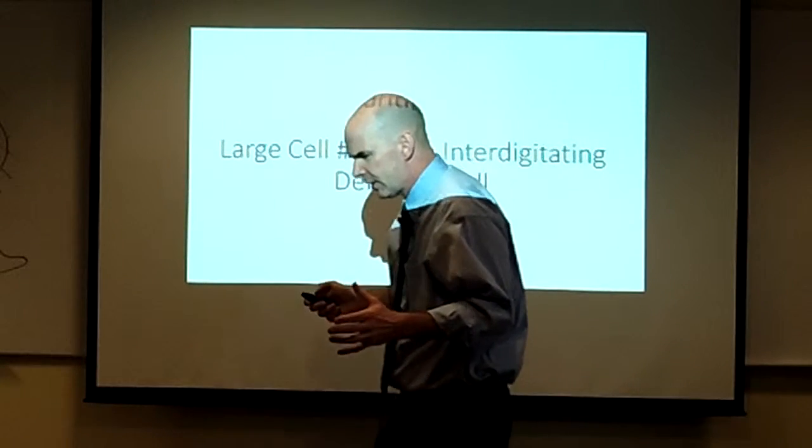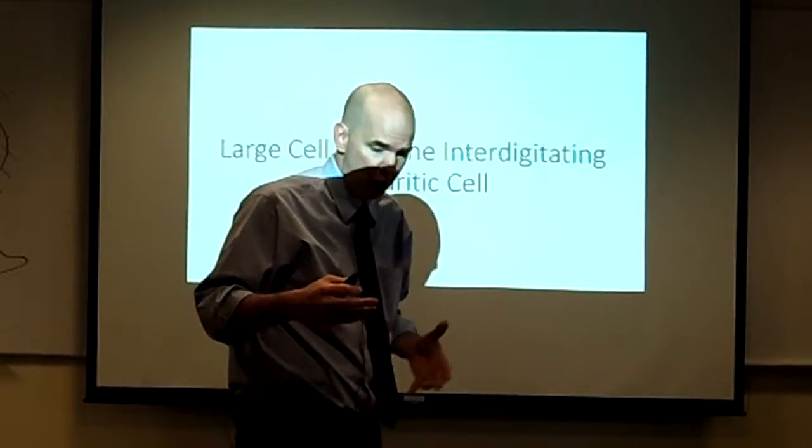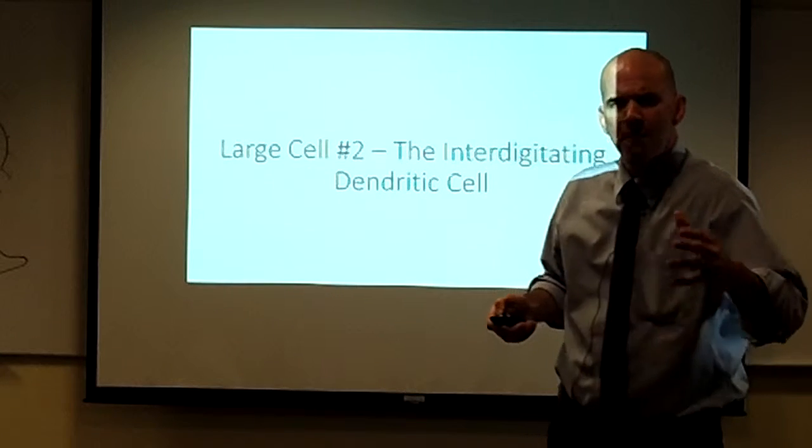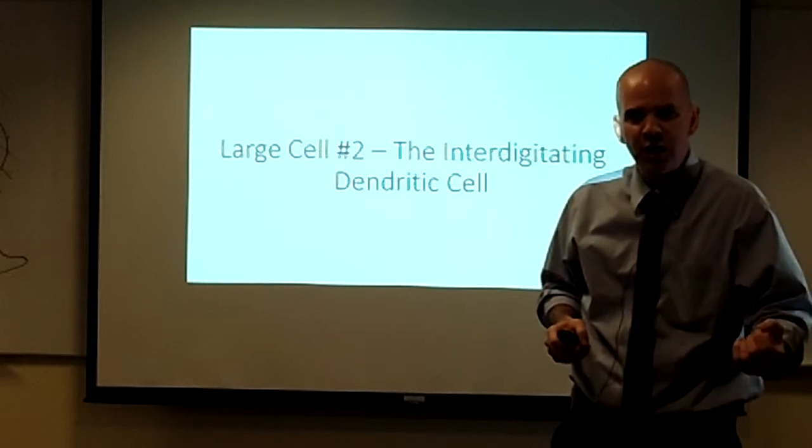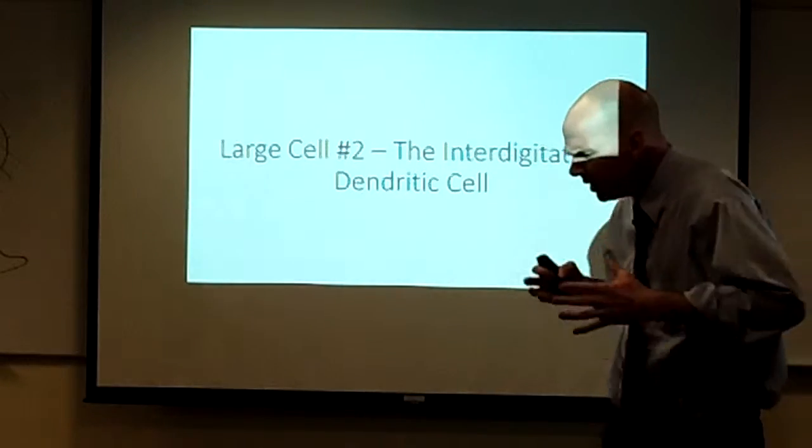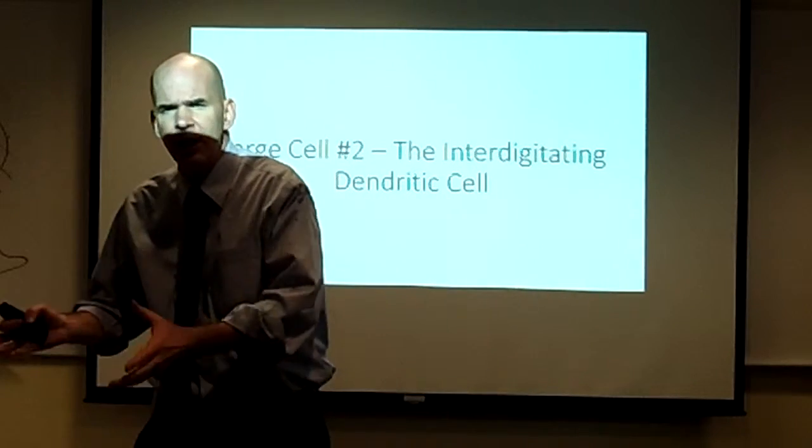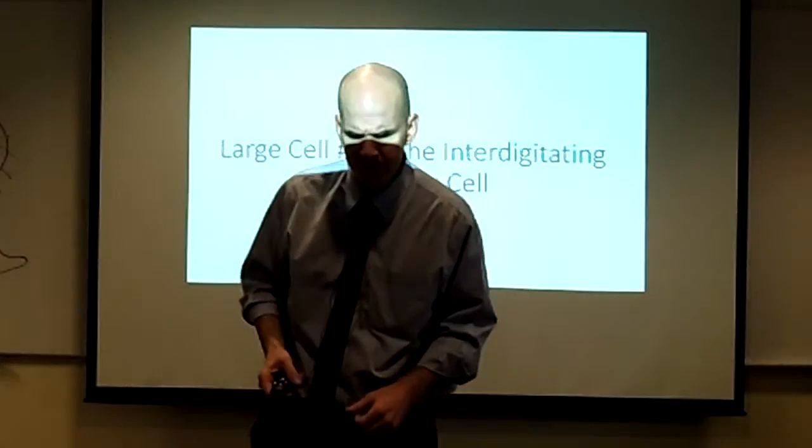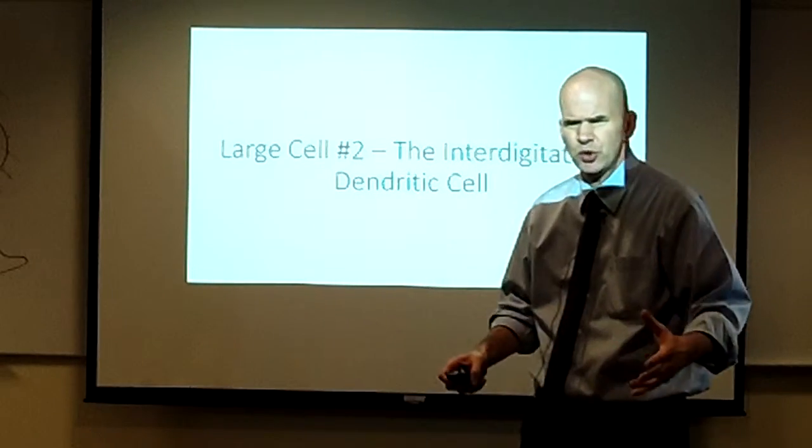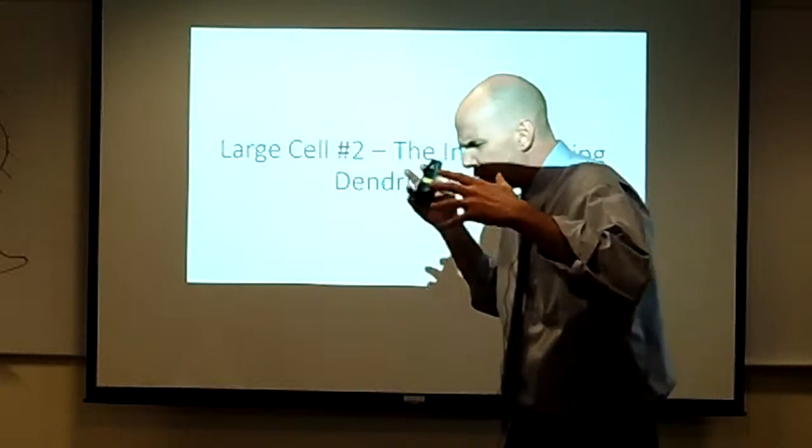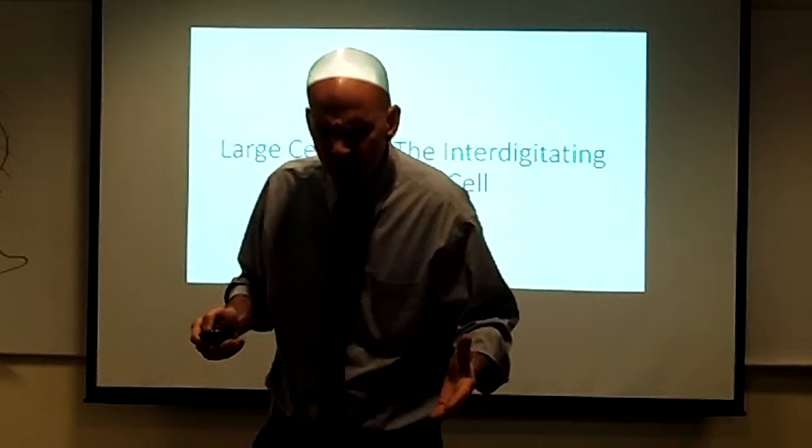The interdigitating dendritic cell, like the macrophage, begins life as a monocyte. But as opposed to differentiating in the direction of phagocytosis and cleanup like macrophages, interdigitating dendritic cells differentiate in the direction of antigen presentation. At first, they're out in peripheral tissues. They're out under the skin and in the oral mucosa and in the gut mucosa and lungs and so forth. And they're serving a job as sentinels. They're out monitoring their environment, looking for anything amiss.